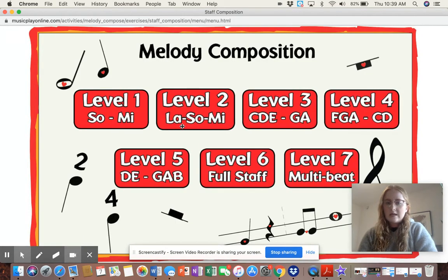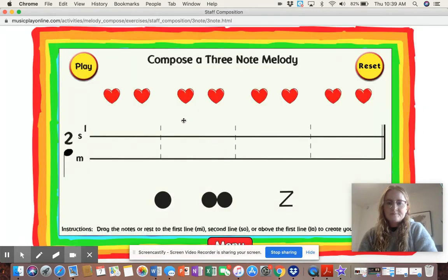We are going to pick the La So Mi, Level 2. When you get there, this is what you will see. Now, we are going to compose a three-note melody. So each heart is one beat, but we're only going to use three notes.